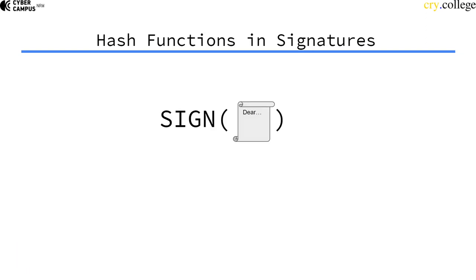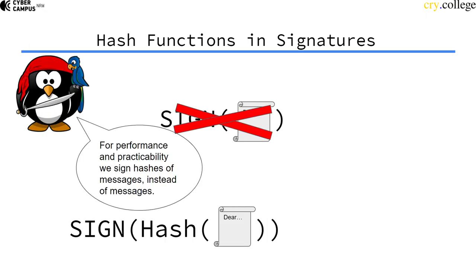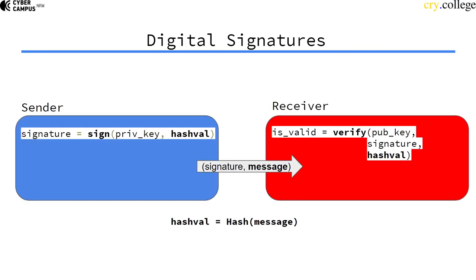Instead of actually signing documents, texts, or messages in digital systems, for practicality and performance reasons we sign hashes of those messages instead of the messages themselves. So what we really do is sign the hash value of a message, then transfer the signature and the message.